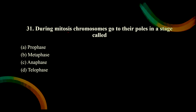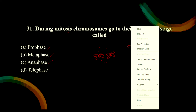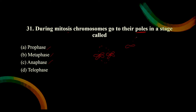During mitosis, chromosomes go to their poles - the chromosomes are going to the poles in a stage called what? In prophase there is aster formation and disappearance of the nuclear membrane. In metaphase, the chromosomes are at the metaphase plate or equatorial plate. After that, in anaphase, the chromosomes get separated and move towards the opposite poles. So the correct answer is anaphase.